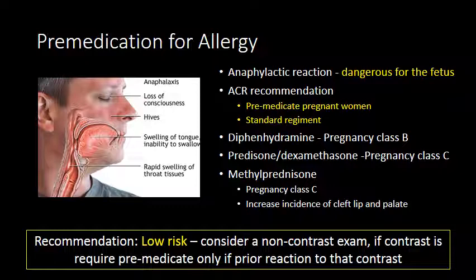It is recommended that a standard pre-medication regimen be used, typically consisting of an antihistamine and a steroid. The most common antihistamine is diphenhydramine, which is felt to be relatively safe in pregnancy and is pregnancy class B. The most common steroids used are prednisone and dexamethasone, which are not well studied in pregnant women but are generally felt to be safe and have no documented adverse outcomes. Methylprednisolone, used for IV steroid administration, is considered pregnancy class C, with small studies showing increased evidence of cleft lip and palate after administration, though this risk is relatively small.